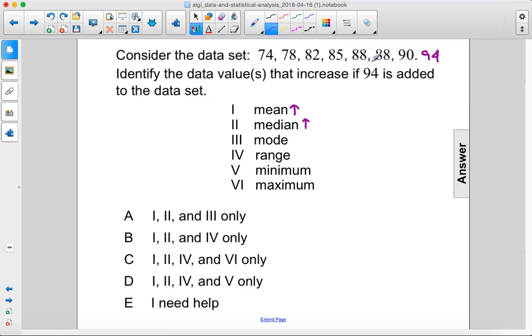The mode stays the same because we still have 88 as our mode, so not the mode. The range has increased because instead of 90 minus 74, now it's 94 minus 74.